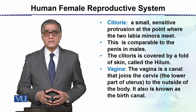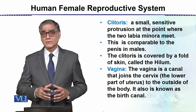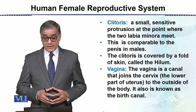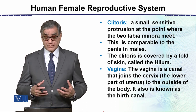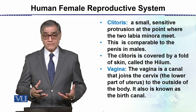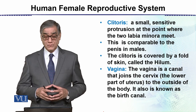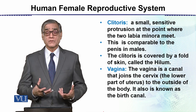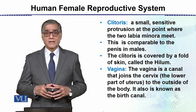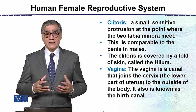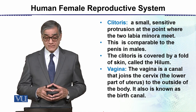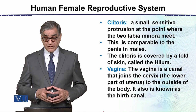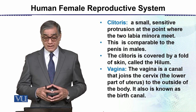There is another structure called the Clitoris, which is comparable to the Penis in males. The Clitoris is very sensitive to touch, and sexual excitement is due to the stimulation of the Clitoris. The Clitoris is covered by a fold of skin called the prepuce.